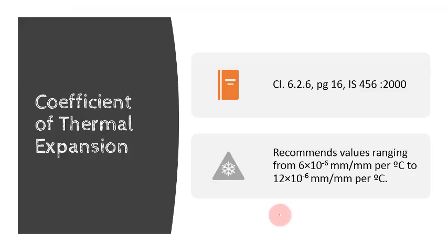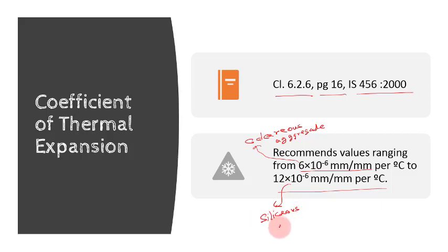Coefficient of thermal expansion: For the purpose of design, the coefficient of thermal expansion of concrete is required. You can refer to Clause 6.2.6, page 16, of IS 456:2000. Here you will find the recommended values range from 6 × 10⁻⁶ mm per mm per degree centigrade to 12 × 10⁻⁶ mm per mm per degree centigrade. The value 6 × 10⁻⁶ mm per mm is for concrete with calcareous aggregate, while 12 × 10⁻⁶ is for concrete with siliceous aggregate.